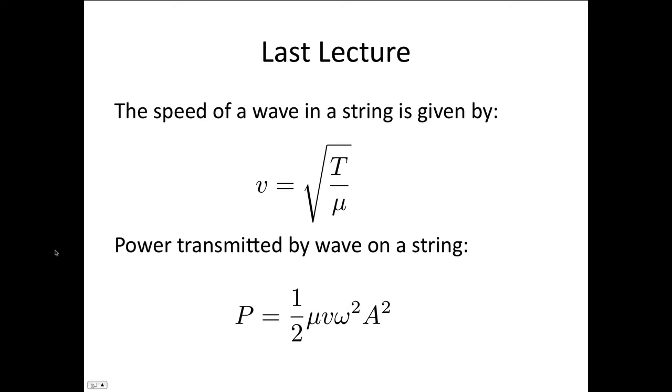Last lecture we showed that the speed of a wave on the string is given by the square root of the tension divided by the mass per unit length.